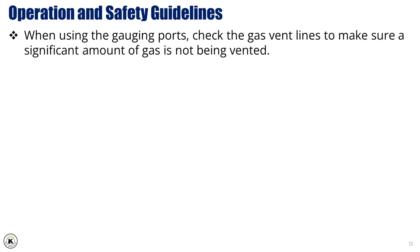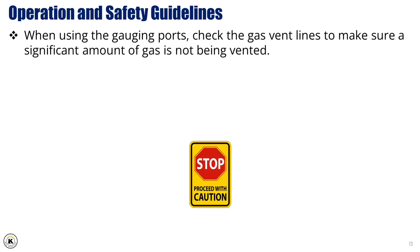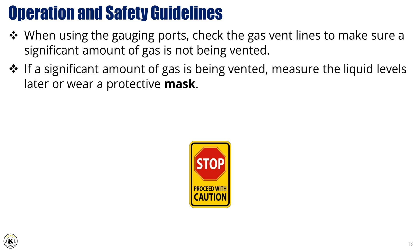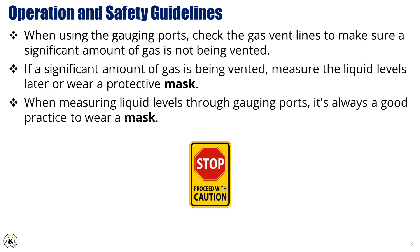When using the gauging ports, always start by checking the gas vent lines. Make sure that a significant amount of gas is not being vented through them. If you notice heavy gas venting, it's safer to delay measuring the liquid levels, or if it's necessary to proceed, wear a protective mask. In fact, whenever you're measuring liquid levels through the gauging ports, it's always a good practice to wear a mask. This small precaution can make a big difference when dealing with potentially hazardous vapors.